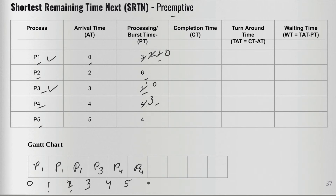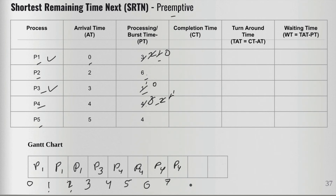P4 continues running. We run it for another unit at time six — remaining becomes two. Then another at time seven — remaining becomes one. Then one final unit at time eight. P4 ran for a total of four units and completes at time eight.